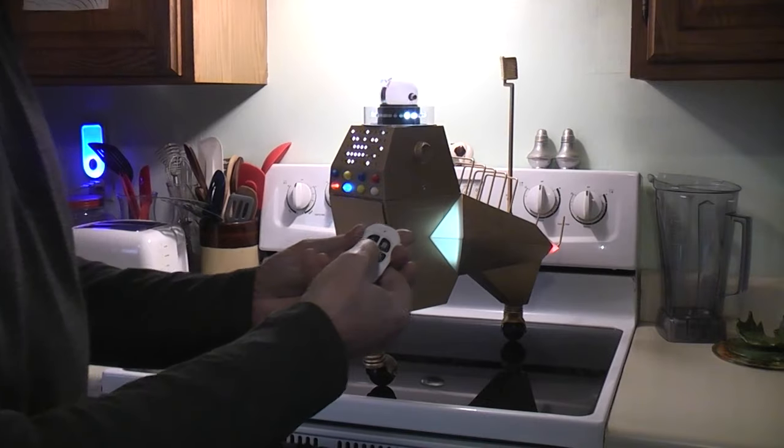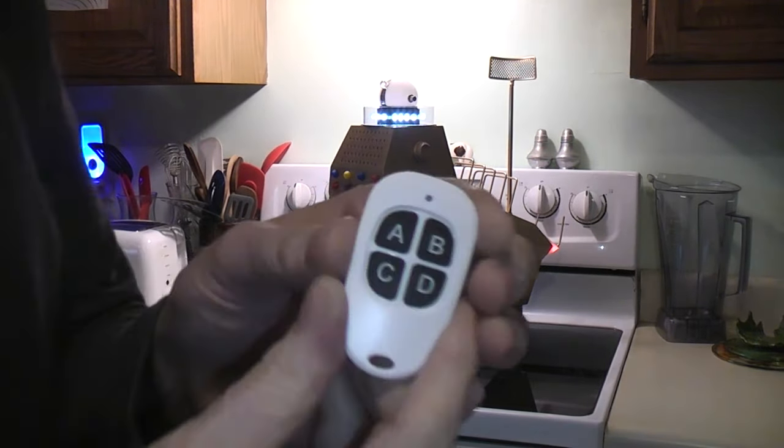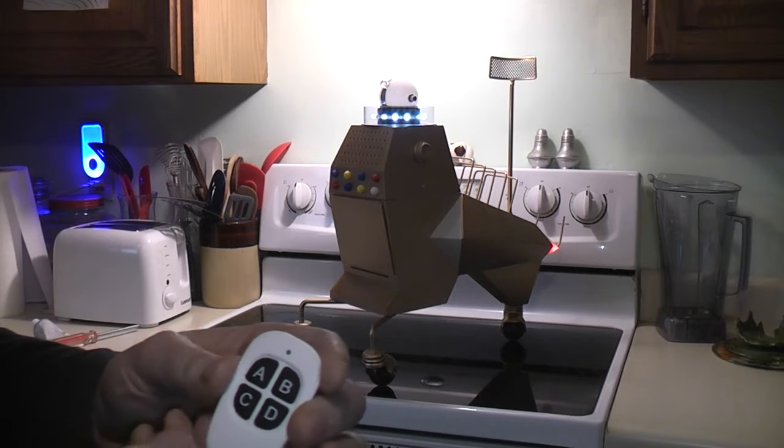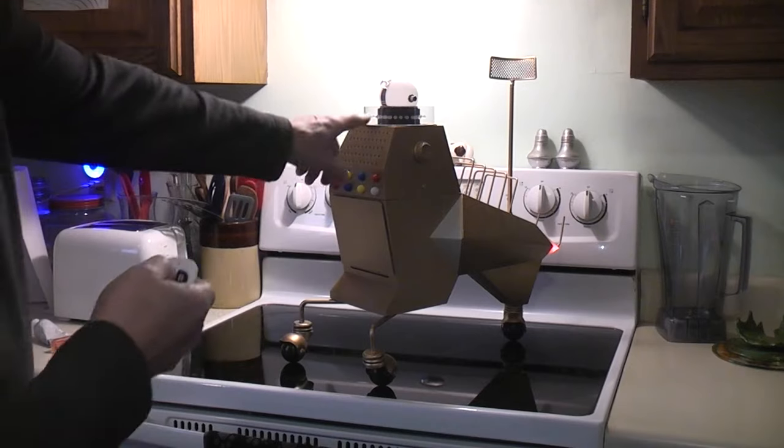Now all of these functions are on this little remote. So for example I can turn the lights on the ring there, off.